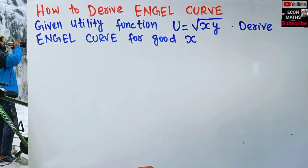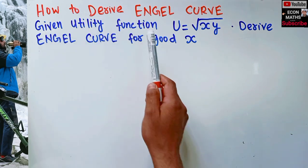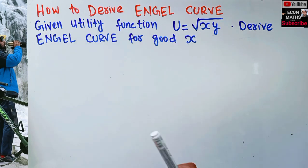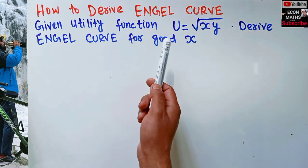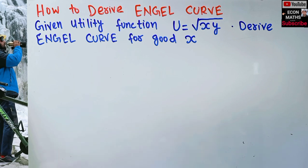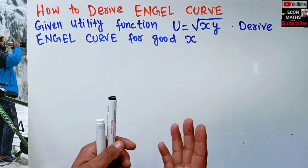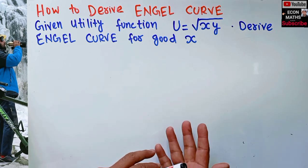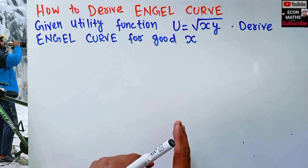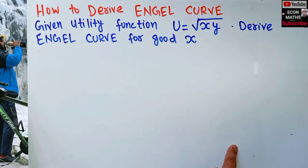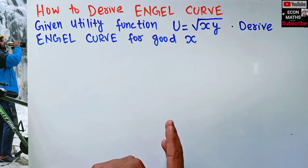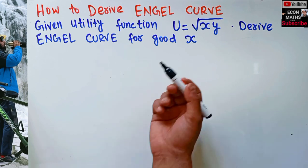In this video we will learn how to derive an Engel curve from a given utility function. The question is: given utility function u = √(x·y), where x and y are two goods, we have to derive the Engel curve for good x. An Engel curve shows us the relationship between income and quantity demanded of a good, holding prices constant.